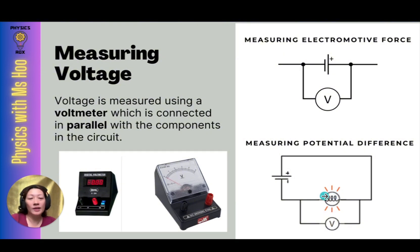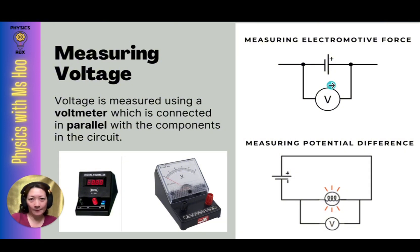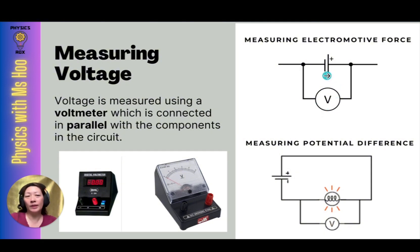When we want to measure the potential difference across a component in a circuit, we place a voltmeter in parallel to that component. For the diagram showing how to measure electromotive force, EMF is the work done by a source to move a charge across a complete circuit. That's why we need to put the voltmeter across the power source — in this case, the cell. However, when we measure the electromotive force, you have to put a voltmeter across the ends of the cell when it's not connected to a circuit.